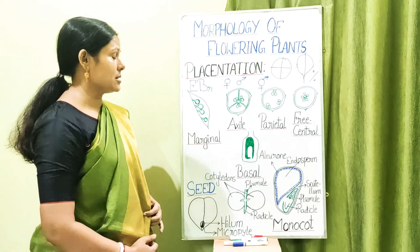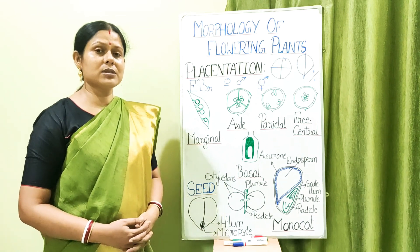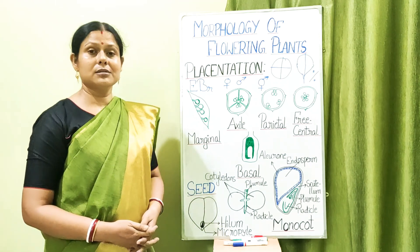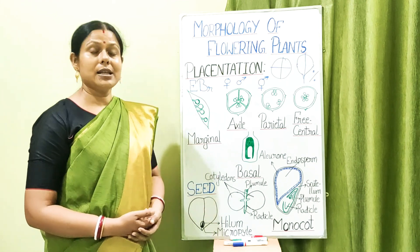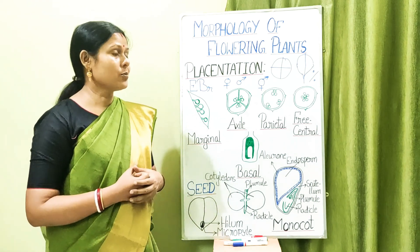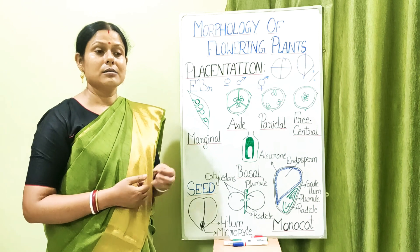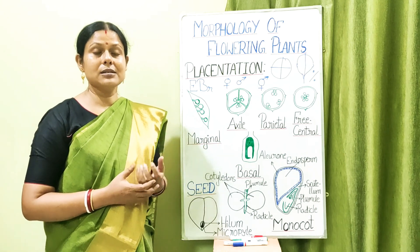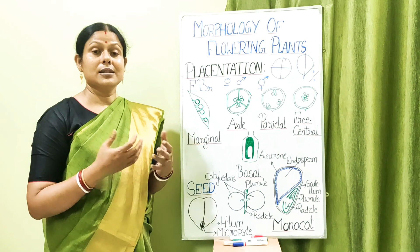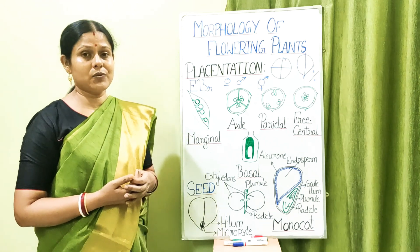Moving to the next whorls — stamens grouped together are called delphous. If they are free, the flower is polyandrous; if they form two bunches, it is diadelphous; if many bunches, polyadephous. The gynoecium can be monocarpellary — having a single carpel. If carpels are united they are called syncarpous; if free from each other, they are called apocarpous.